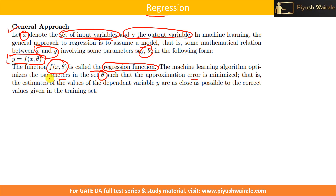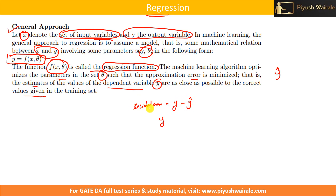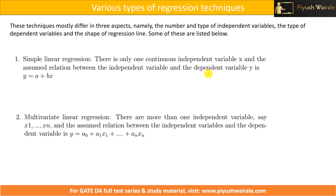The error means that estimates of the dependent variable y are as close as possible to the correct values given in the training set. This error is the residual error. If y is the actual output from the training dataset and y' is the predicted output, then the difference between actual and predicted is the residual error, and we try to minimize that error so our model is more accurate.